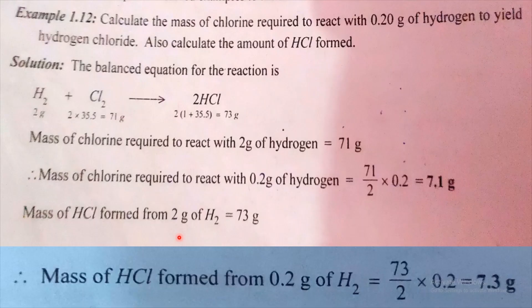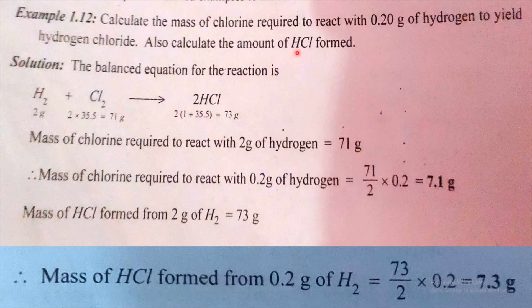First question: calculate the mass of chlorine required to react with 0.20 grams of hydrogen to yield hydrogen chloride. Also calculate the amount of HCl formed.